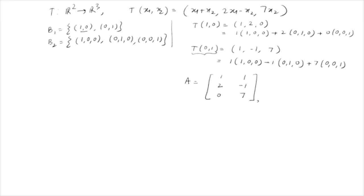So the matrix associated with this linear transformation corresponding to bases B1 and B2 is given by the first coordinate column [1, 2, 0]ᵀ and the second coordinate column [1, −1, 7]ᵀ. This is the matrix associated with this linear transformation T with respect to the standard bases of R² and R³.